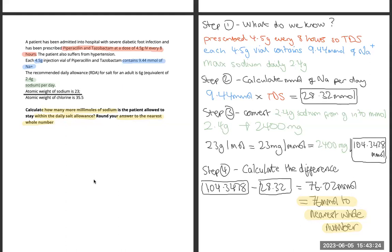What we have to do is work out the difference. We know that the patient is allowed to have 2.4 grams of sodium per day. You are also given the atomic weight. Therefore, you need to use these together.